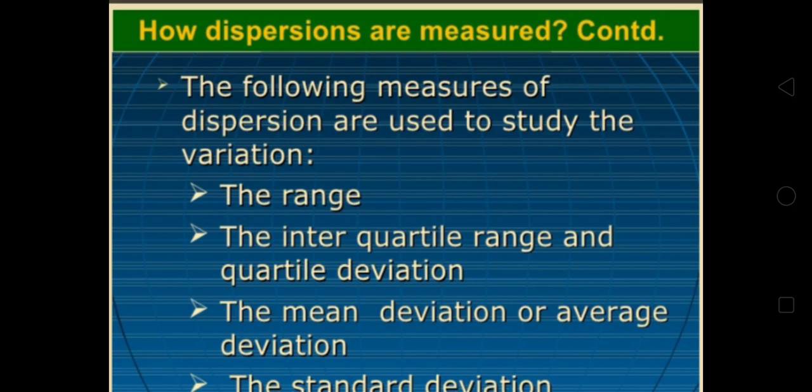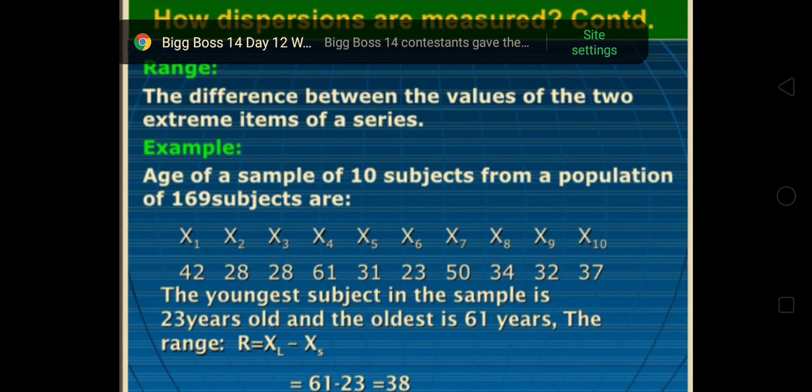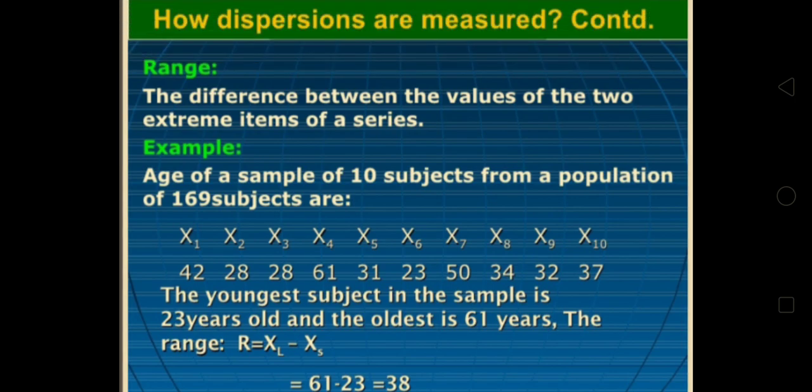Range is the first one. The difference between the values of two extreme items of a series is called range. Example: the highest value in the series is 61 and the lowest value is 23. 61 minus 23 equals 38, which will be the range.